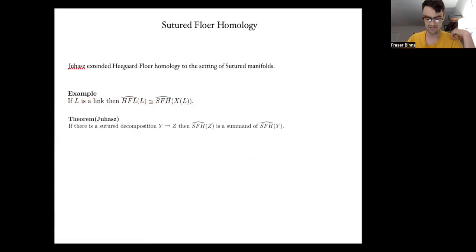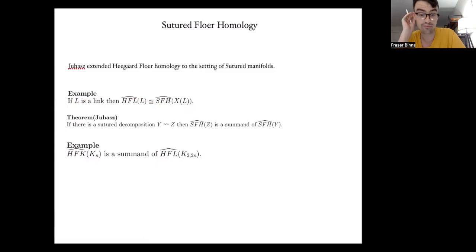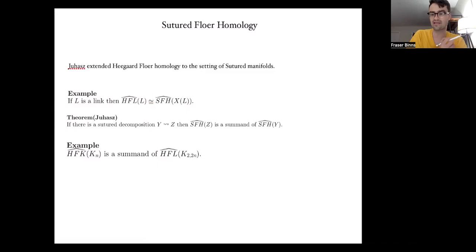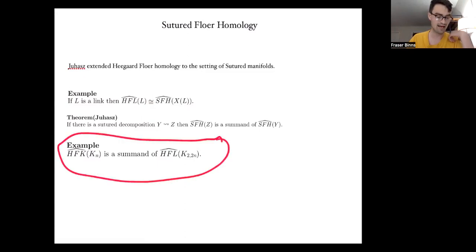We'll use Juhász's theorem in a specific case. The knot Floer homology of the core of n-surgery on K is actually a direct summand of the link Floer homology of the 2-to-N cable. This is because there is a sutured decomposition from the exterior of the K2N cable to the exterior of the core of n-surgery on K. By Juhász's theorem, the sutured Floer homology of the latter is a summand of the former, and these sutured Floer homologies are exactly the respective knot Floer and link Floer homologies.